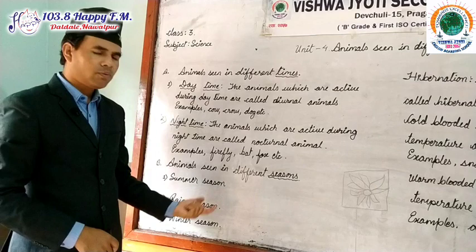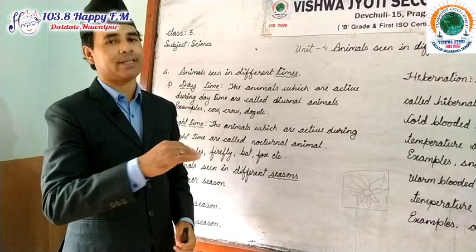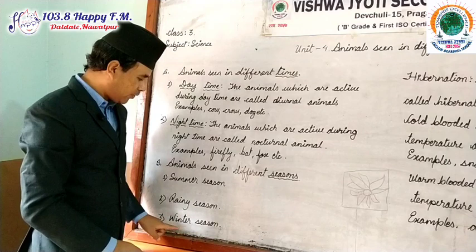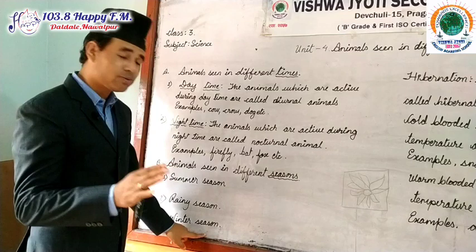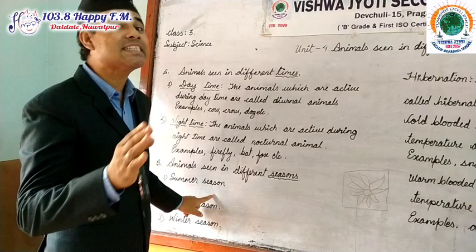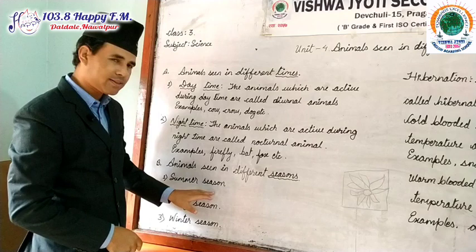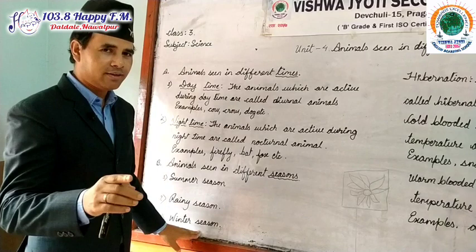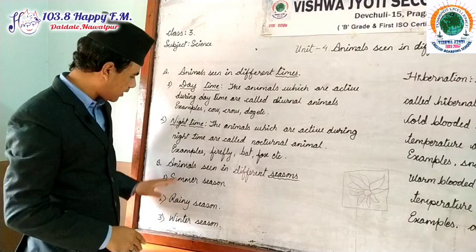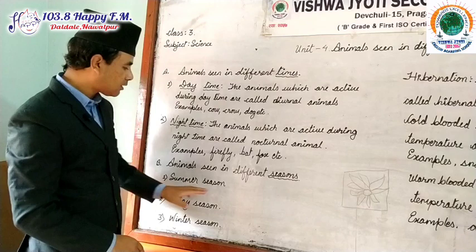During the summer season, we see snakes. During winter season, we do not see snakes. We see snakes around our locality — in the bushes or in the field — during summer, but we do not see them during winter. That is why we say animals are seen in different seasons.